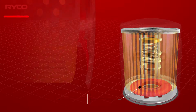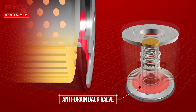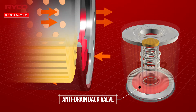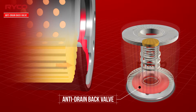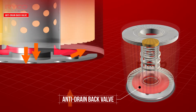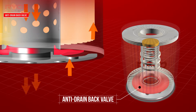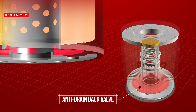An anti-drain back or anti-siphon valve is used to keep the oil filter full when the engine is switched off. Located between the element and the housing inlet on the base plate, these valves open easily and stay open when under pressure, allowing oil to continuously enter the filter. When the engine is switched off and oil pressure drops, the valve closes, blocking the intake ports and preventing oil from siphoning from the filter and returning to the sump. For any filter mounted with its inlet and outlet facing down and with no anti-drain back controls on the engine, it's critical that the oil filter be fitted with this device to ensure a rapid pressure build up and instant oil flow to engine components.